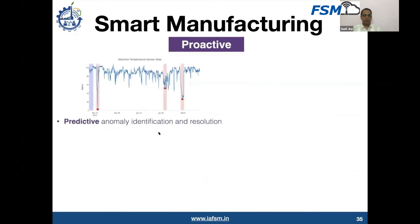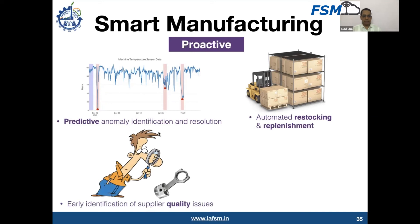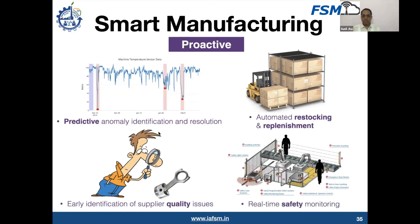You should also have implemented some proactive approaches. The system should be able to predict anomalies, identify the reasons, and then resolution can happen. Your stocks and warehouses can be replenished automatically — the system throws information when an item is about to go out of stock and takes care of replenishment. You will have early identification of quality issues, not only in your factory but with your suppliers also. You might have implemented those systems, and certainly you build up a good real-time safety monitoring in your facility.